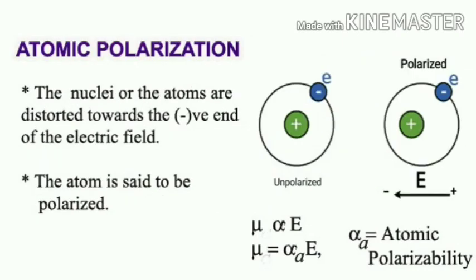The second type of polarization observed when a molecule is placed in an electric field is atomic polarization. The nuclei or atoms in the presence of an electric field are distorted towards the negative end of the field, and the dipole moment is found to be directly proportional to the field strength. This is known as atomic polarization.